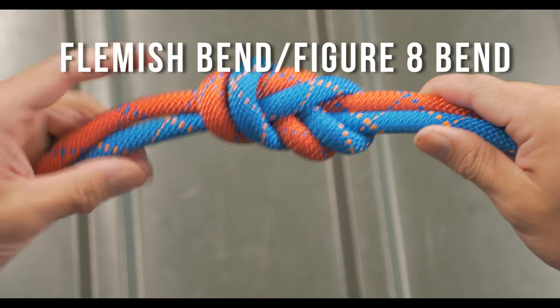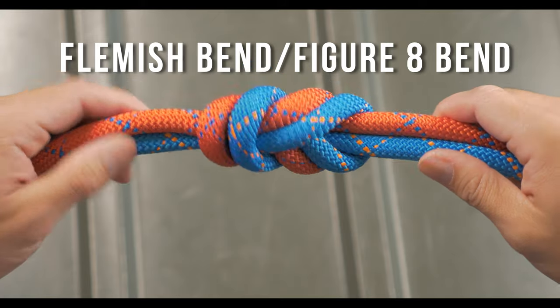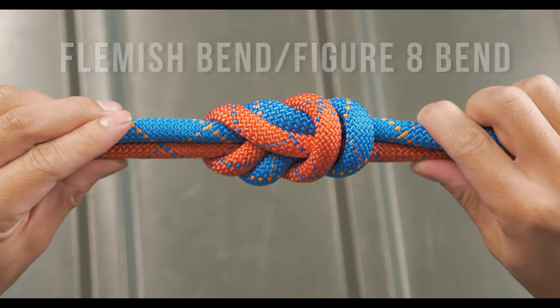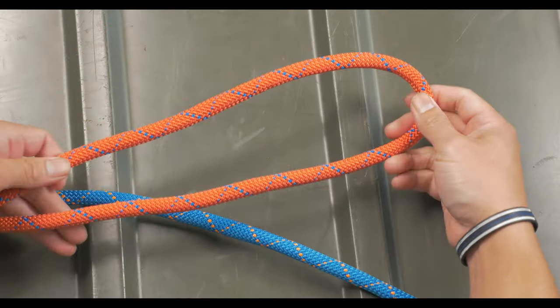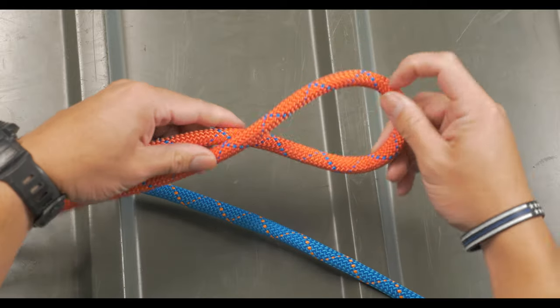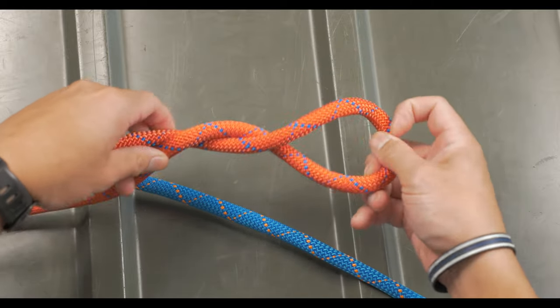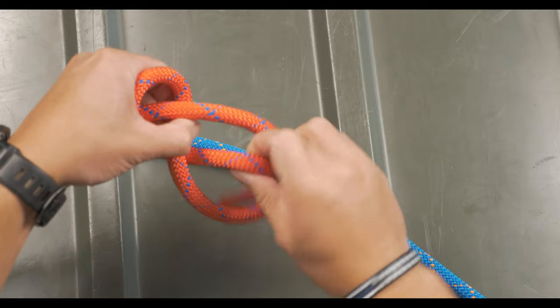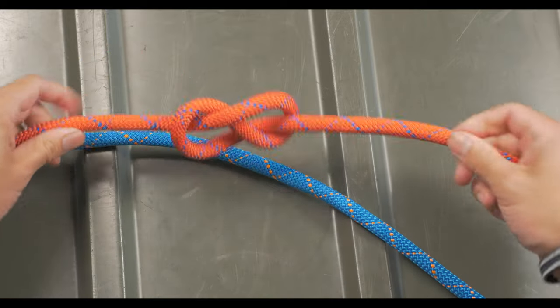The Flemish bend or the figure eight bend is a solid knot that can hold a lot of weight. To start the figure eight, you'll begin with a bite and you'll twist it twice. Once the bite is twisted, you'll reach through the eye and pull the working end through it to create the figure eight.